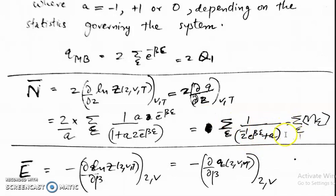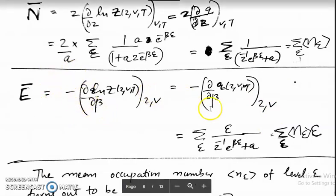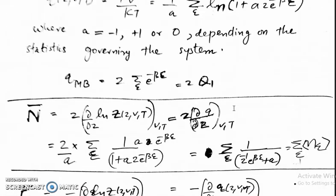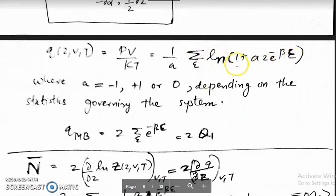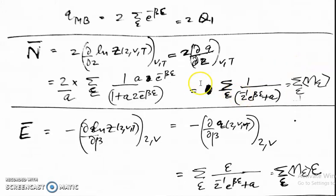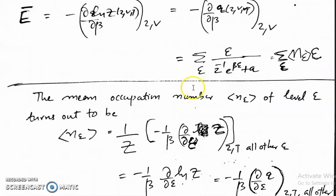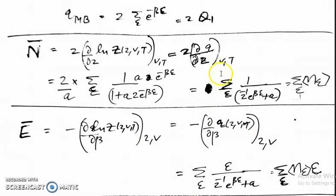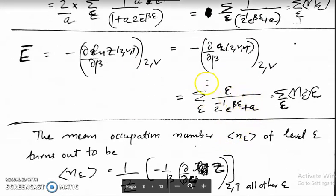For the average energy, differentiating Q with respect to β gives (1/a) · Σ_ε · [1/(1 + a·z·e^{−βε})] · (−a·z·ε·e^{−βε}). The factor a cancels, yielding the average energy expression with ε in the numerator.